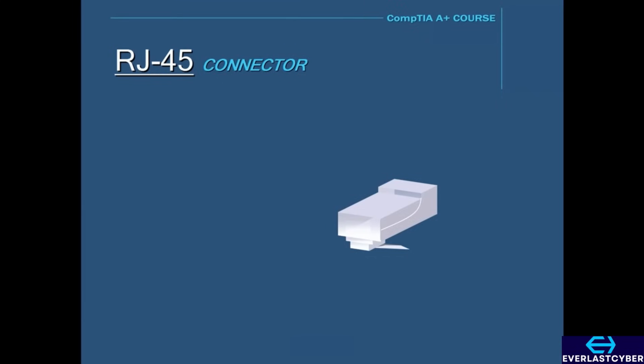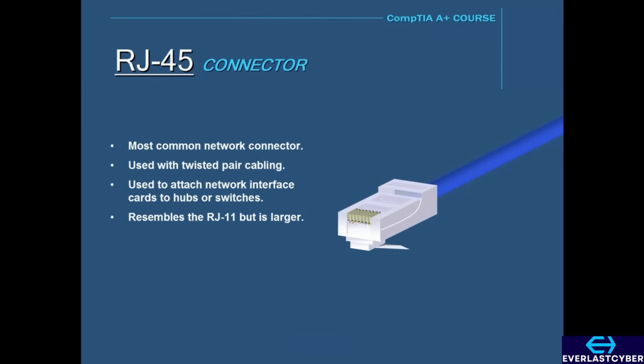The RJ45 is by far the most common network connector. This is an eight-wire connector used to connect computers to local area networks. Like the RJ11, it also locks itself into place by a single locking tab, and it also resembles an RJ11 but is a little bit larger.